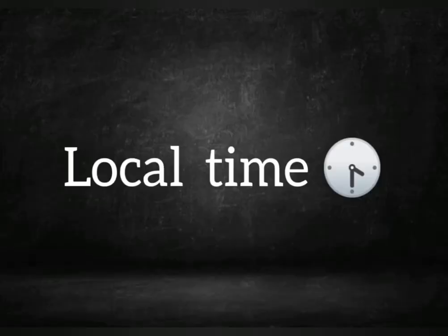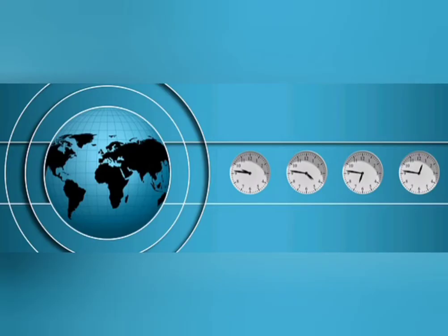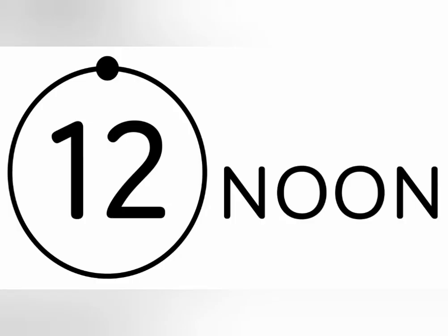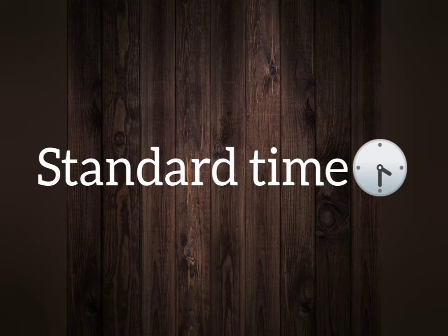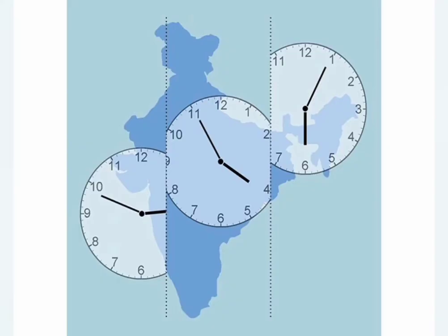The local time of any place is 12 noon when the sun is exactly overhead. It varies from Greenwich time at the rate of four minutes for each degree of longitude. Standard time is a uniform time fixed by each country, determined in relation to the mean time of a certain meridian which generally passes through it.